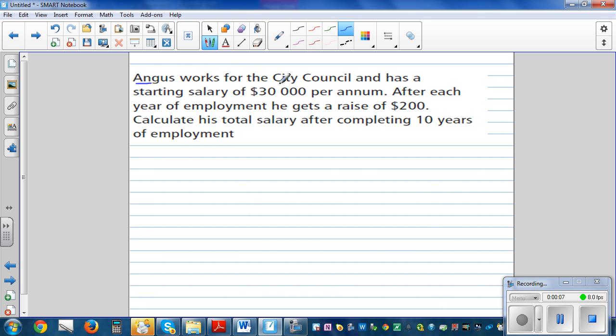Angus works for a city council and has a starting salary of $30,000 per annum. Per annum is per year. After each year of employment he gets a raise of $200. Calculate the total salary after completing 10 years of employment.